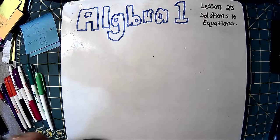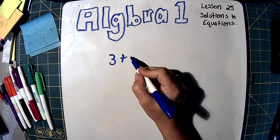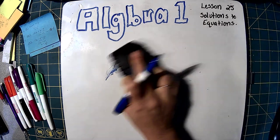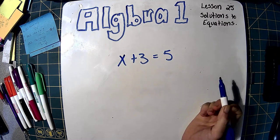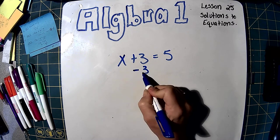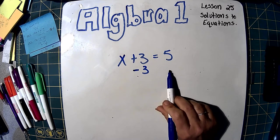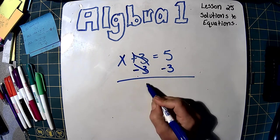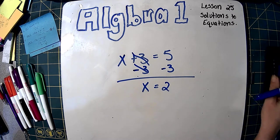First we learned how to get rid of addition and subtraction in equations. Like x plus 3 equals 5. And to get rid of this, we have to undo this addition. So to undo that, we do subtraction. The opposite of addition is subtraction. Whatever we do on one side of the equal sign, we have to do on the other side. These two cancel each other out, and we get x equals 5 minus 3 is 2. That's how we get rid of addition.